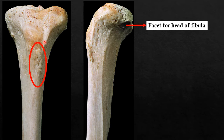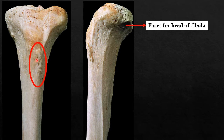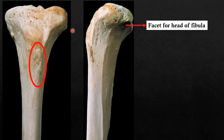Without seeing the tibial tuberosity or the medial malleolus, we can identify which side the tibia belongs to by features present at the upper surface of the tibial condyles. One common examination question is to identify the tibial tuberosity and state its muscle attachment. The answer is the quadriceps tendon and the ligamentum patellae, which attach to this tibial tuberosity.